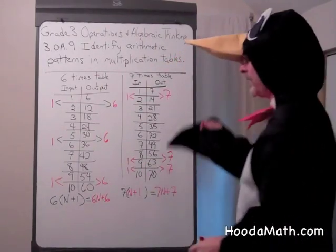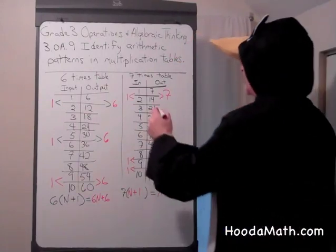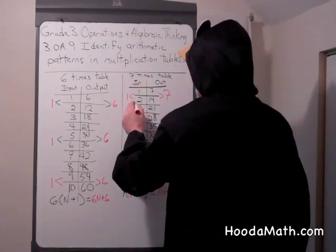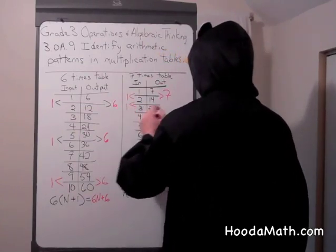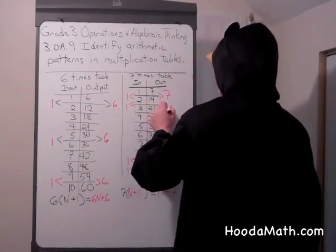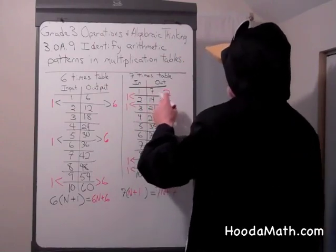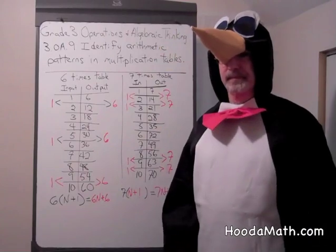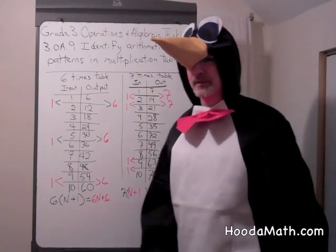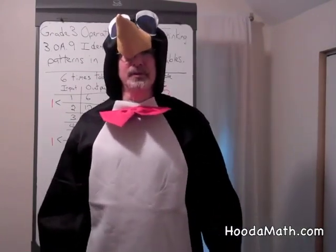This is the arithmetic pattern. And with the seven times table, the next consecutive number increases by one in the input. In the output, the next consecutive number is an increase by seven. I hope you see the patterns. I hope you enjoy learning about penguins.